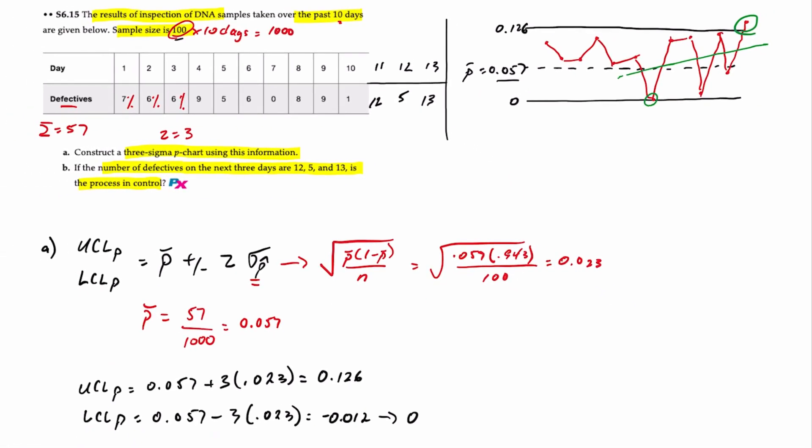And that's it. That's how we determine the overall proportion of defects that we use to calculate the upper and lower control limits for a p chart, and then plot all of our data as a percentage of total defects to determine if our process is in control.